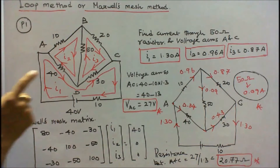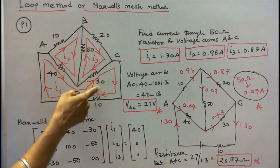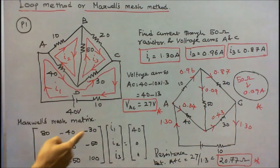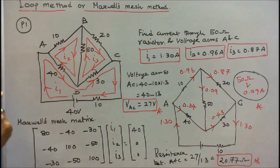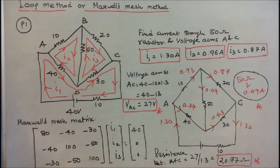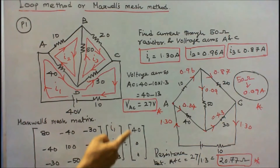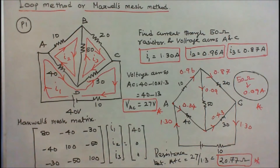The resistor common to loops 1 and 3 is 30 ohm, so the element is minus 30. The resistor common to loops 2 and 3 is 50 ohm, so the element is minus 50. The matrix equation gives I1, I2, I3 equal to V1 = 40, V2 = 0, V3 = 0. Once the matrix is formed, I can easily solve for I1, I2, I3.